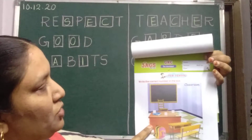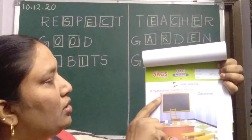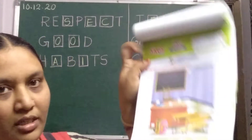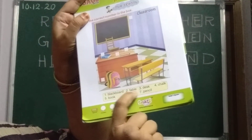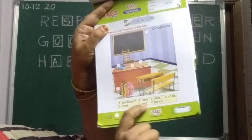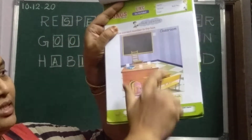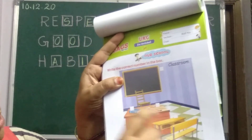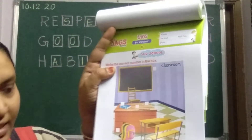Page number 27, Our School. Write the correct number in the box. See, children, here a few words they gave: number 1 — blackboard, table, desk, chalk, book, bag, and pencil. The things are here and near each thing, one small white color box is there.